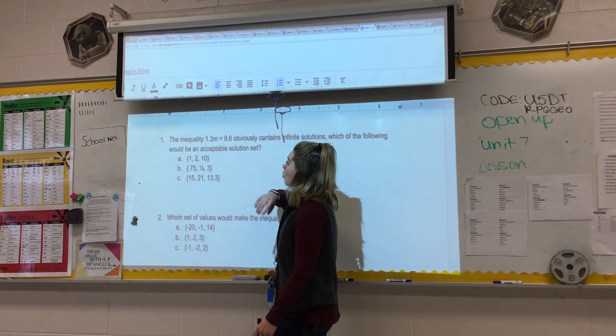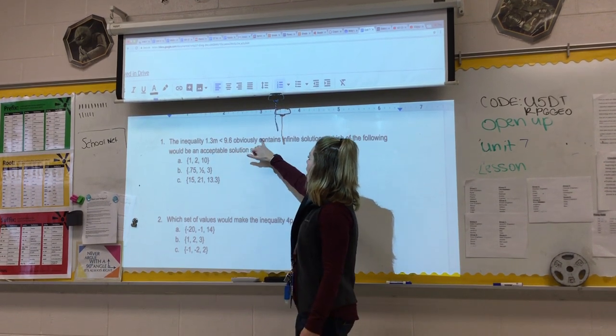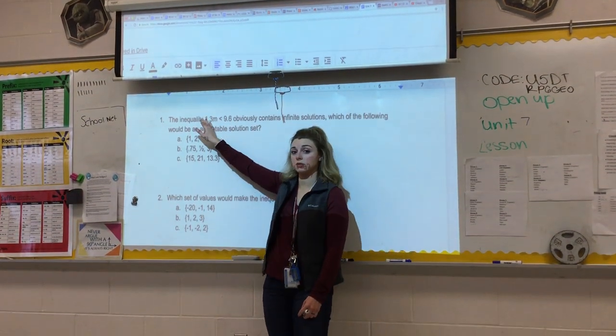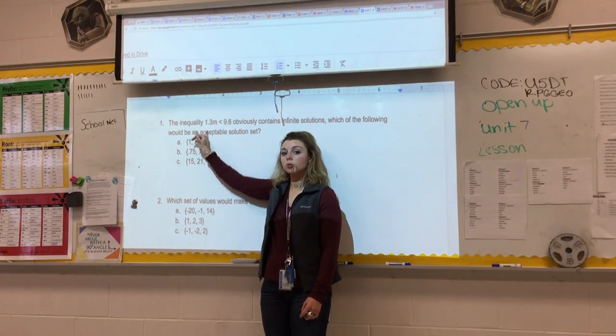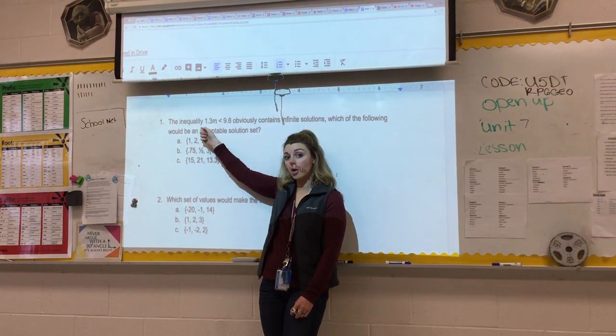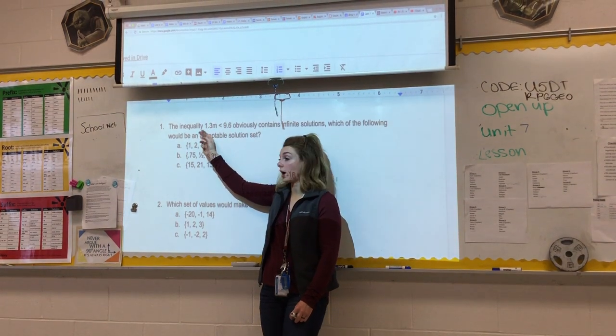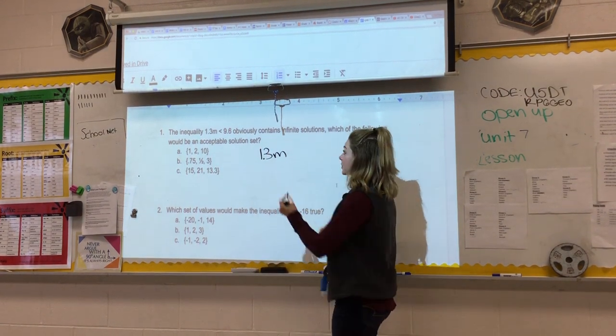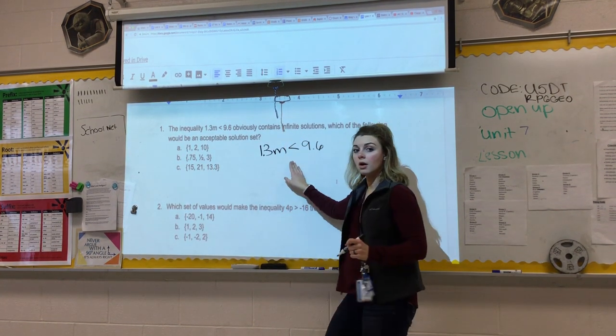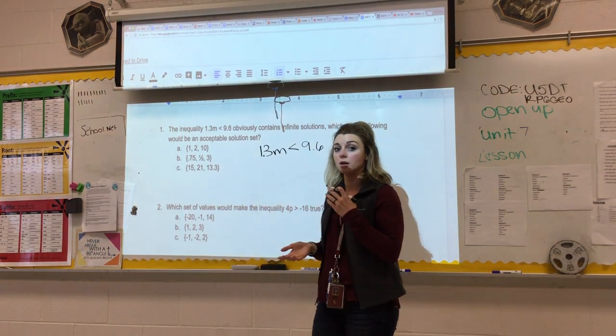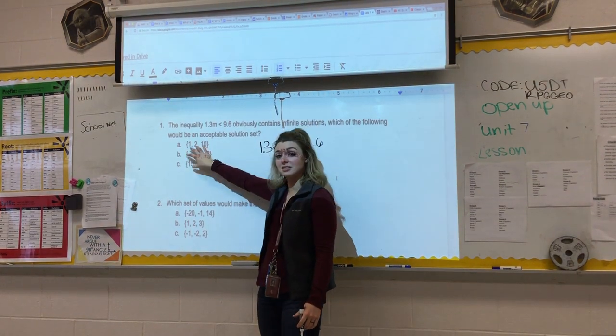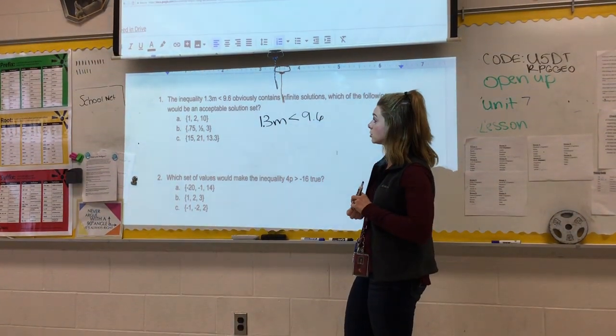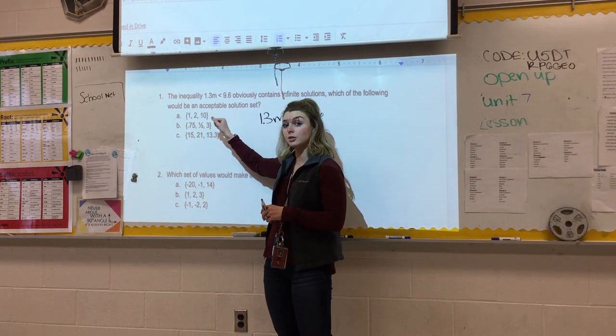Because you can always ask me questions on Remind, Classroom, email, Canvas. But you can also just reach out and let me know if something's going really well or if you're really good at one of these new concepts. So we are going to start with number one. Number one says the inequality 1.3m is less than 9.6 obviously contains infinite solutions. Which of the following would be an acceptable solution set?